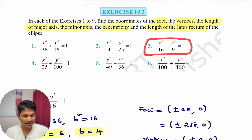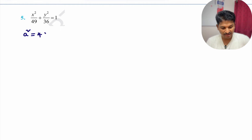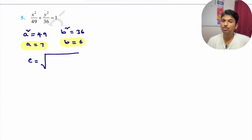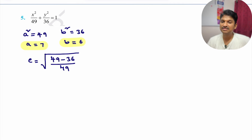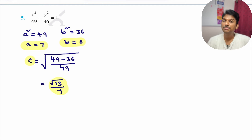I want you to try problem 3 as homework. Now I will do problem 5. From its equation, a² = 49, so a = 7, and b² = 36, so b = 6. For eccentricity, bigger number minus smaller number divided by bigger number: √((49−36)/49) = √(13/49) = √13/7. So we have a = 7, b = 6, and e = √13/7.